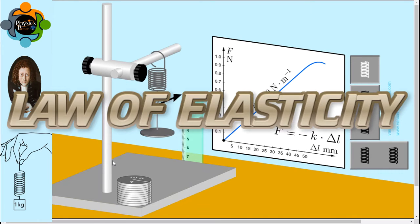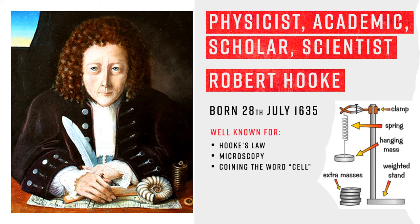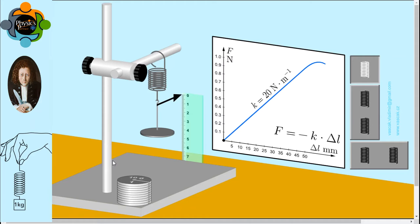Hooke's Law is also called the law of elasticity. Before going to discuss Hooke's Law, let us talk about a small history. It was discovered by an English scientist named Robert Hooke in 1660. So let's do an experiment and understand Hooke's Law.